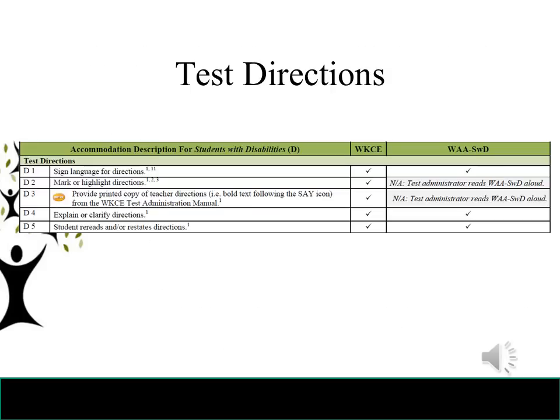Test directions. D1 — the 'D' stands for disability — is sign language for directions, which can be used for the WKCE and the WAA. D2 is mark or highlight directions. D3 is provide a printed copy of teacher directions from the WKCE test administration manual. D4 is explain or clarify directions. D5 is student re-reads or restates directions. D2 and D3 are not applicable for the WAA.